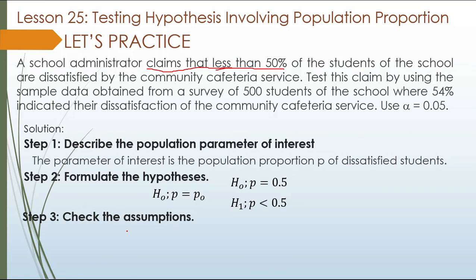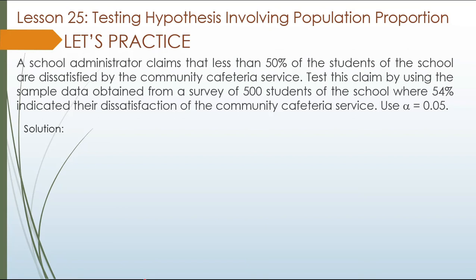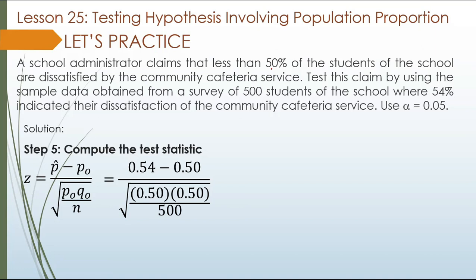Step 3: Check the assumption. The population is 500, therefore we can apply the Central Limit Theorem. Step 4: Significance level and type of test. The significance level is 0.05. The type of test is one-tailed, left-tailed. We have p-hat as 54% or 0.54, p-sub-o as 0.5, and q-sub-o as 0.5 — because it is half and half, they are equal.